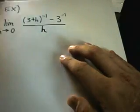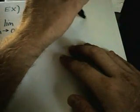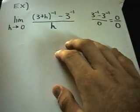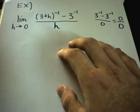If I plug in h equals zero, notice I'll get three plus zero, so I'll have three to the negative first minus three to the negative first over zero. Again, this turns into zero over zero, so we're going to have to be a little more clever on how we do this one.